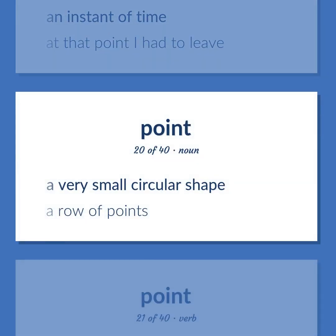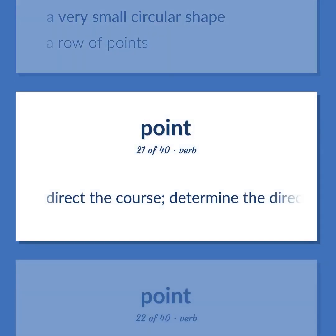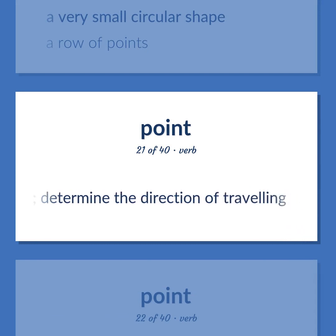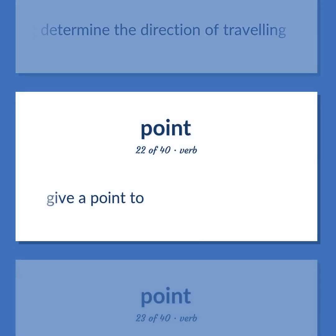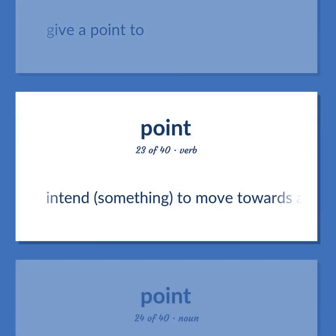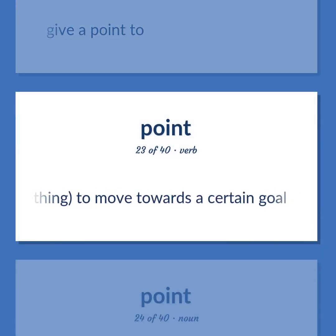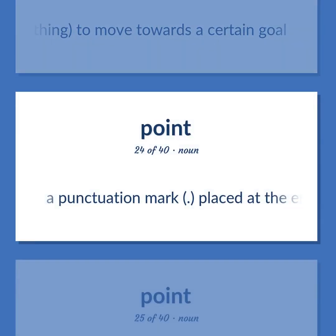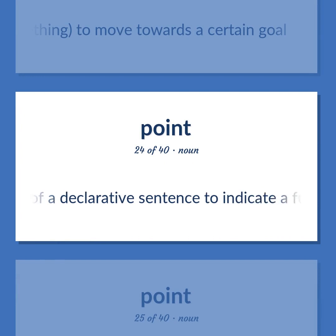Point: A very small circular shape; a row of points. Direct the course; determine the direction of traveling. Give a point to. Intend something; to move towards a certain goal.